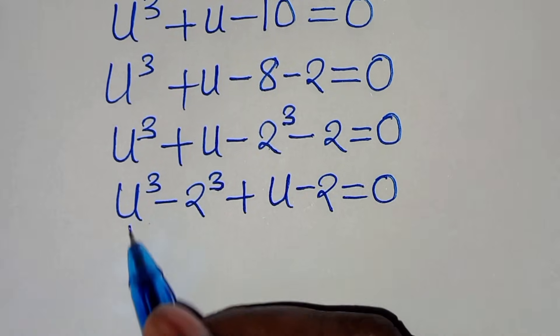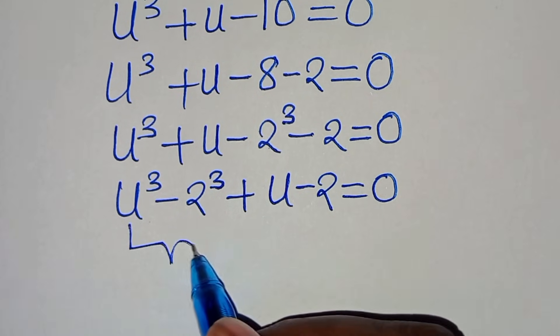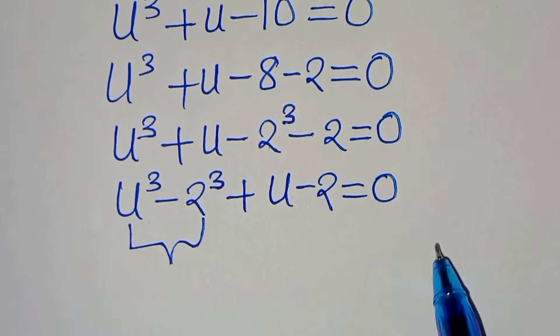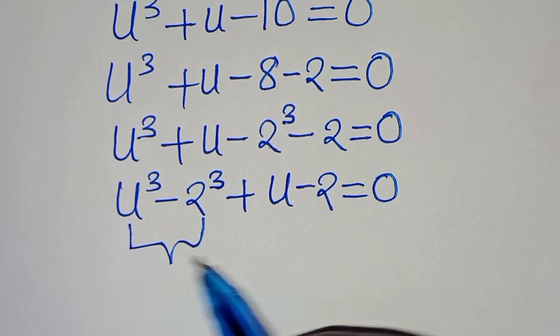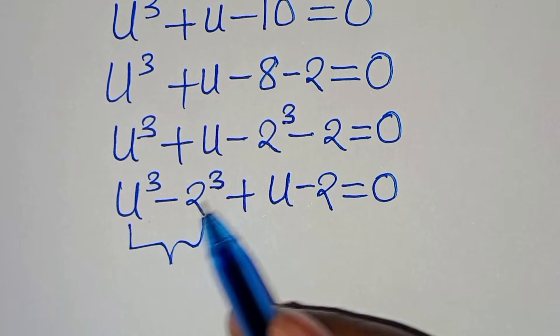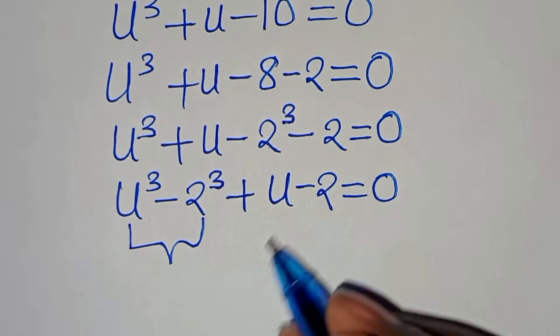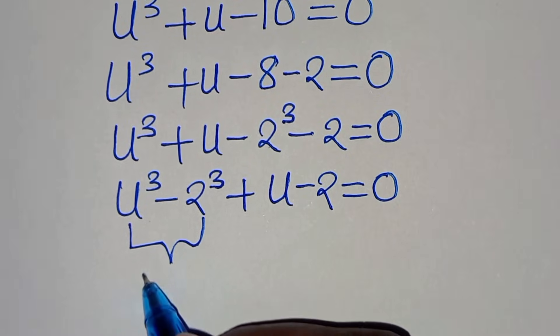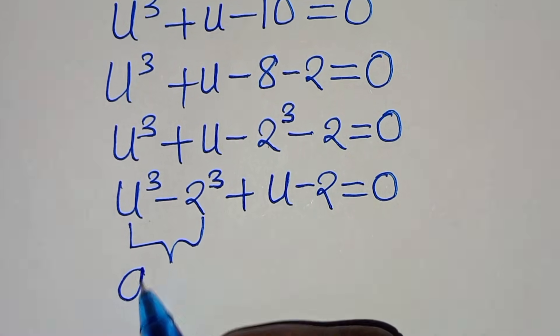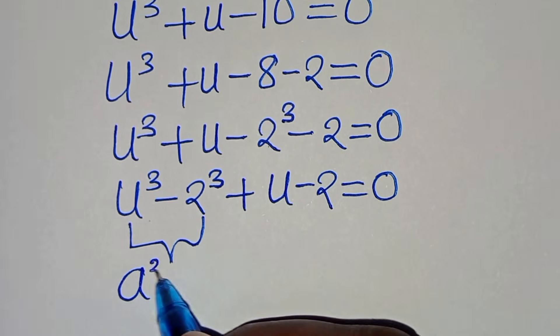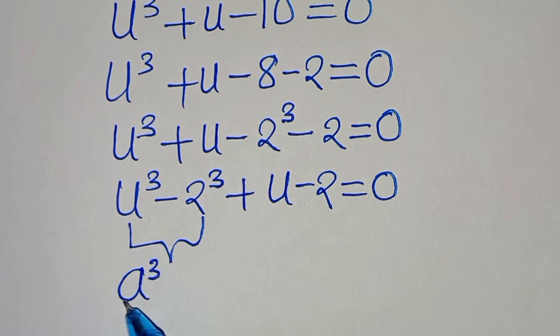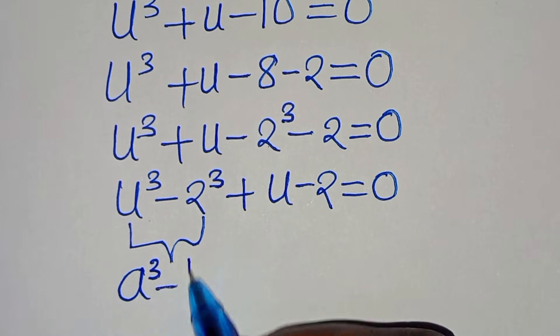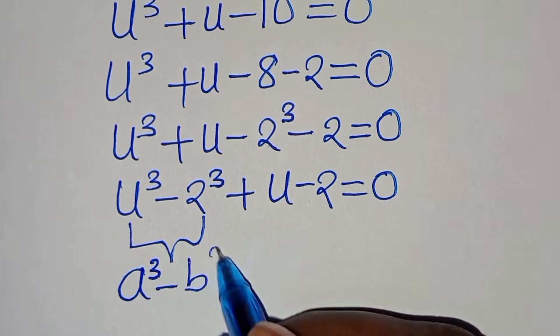Now this particular part — u to the power of 3 minus 2 to the power of 3 — is actually the difference of two cubes, expressed as a to the power of 3 minus b to the power of 3.